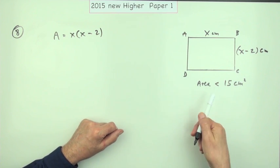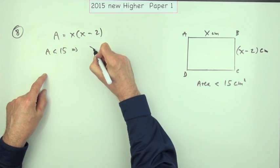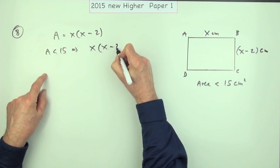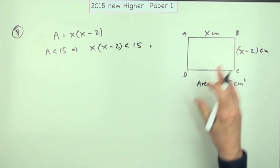Now the rest of the information says that area is less than 15. A is less than 15 means you've got x times (x - 2) is less than 15. And that's the first mark, just for interpreting that picture, interpreting the situation, creating this model.